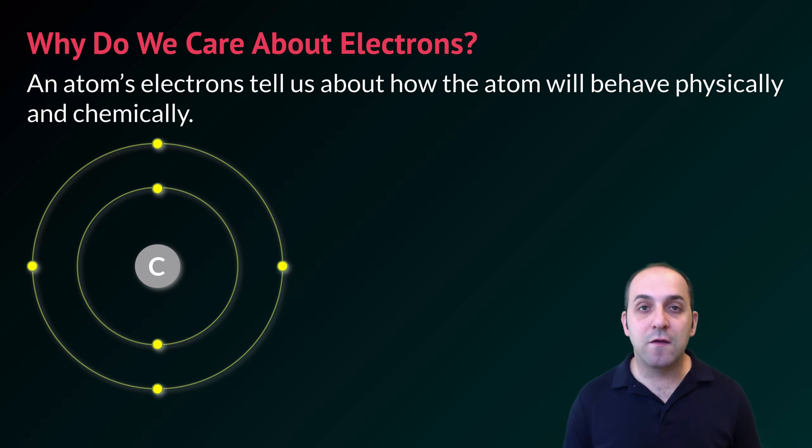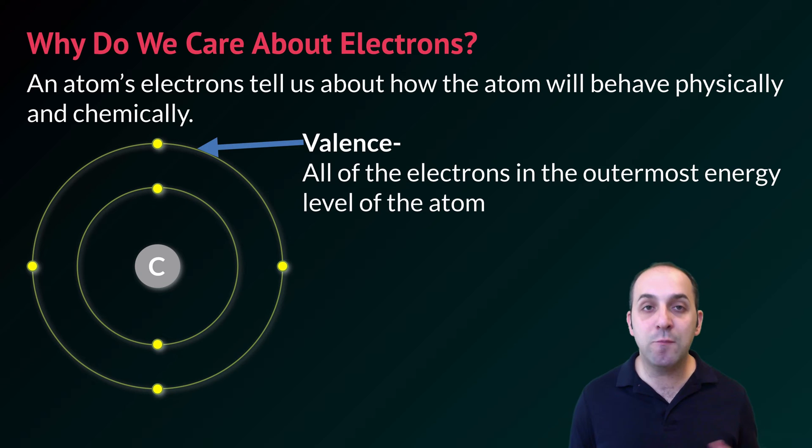When we consider the electrons in an atom we can group them up into two major lumps. The first is the valence. These would be the electrons in the outermost energy level of the atom. So in this Bohr diagram think about the valence as the outermost ring around the atom.